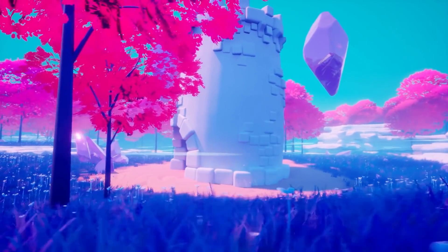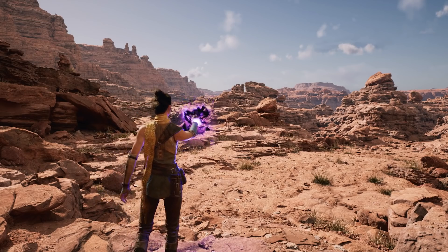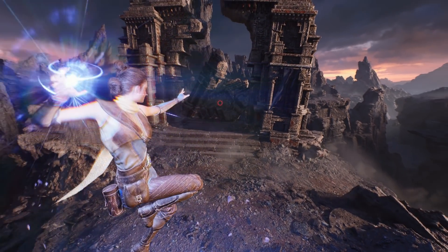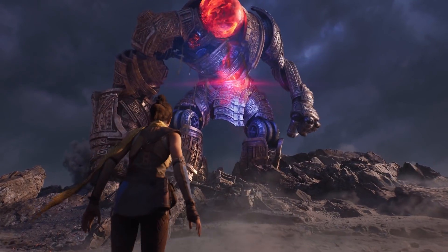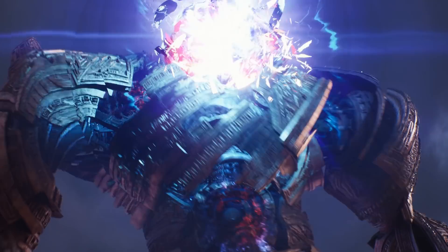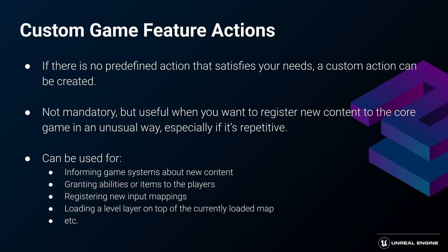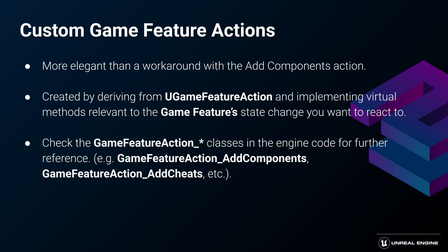The way of adding the shop level to the game is an example of an Add Level Instances action that I took from the Valley of the Ancient project. New actions can be easily created by developers to best serve the specific needs of their games. The Valley of the Ancient is a great reference — it's a AAA quality sample that Epic made free and available to download from the Epic Games Launcher. It includes a few examples of custom game feature actions built specifically for that project's needs. The game feature actions can interact with your core game systems, and you could create an action that grants the player a new ability, registers input mappings for new input actions, or loads a level layer in the way that satisfies your needs.